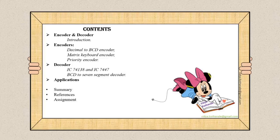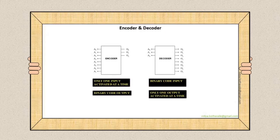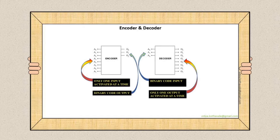The contents we are going to look at are encoders and decoders, the various types of encoders and decoders and their applications. An encoder has only one input activated at a time and binary code output. A decoder, on the contrary, has binary code input and only one output activated at a time.